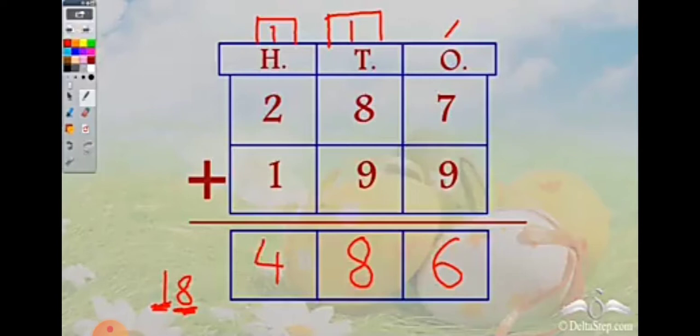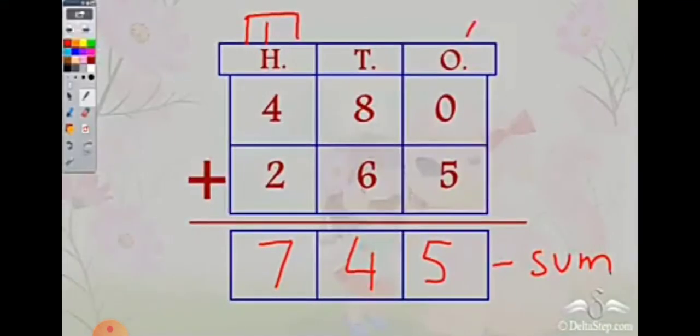Then 1 plus 8 is 9, and 9 plus 9 is 18. Should we write 18 here? No — we write only 8, because whenever we get a two-digit number we always keep the units digit and carry over the tens. So 1 carries over to the hundreds place. Adding hundreds: 1 plus 2 is 3, and 3 plus 1 is 4. The answer is 486.